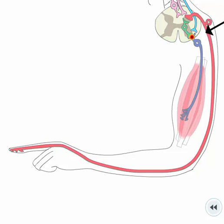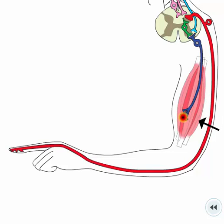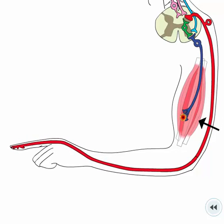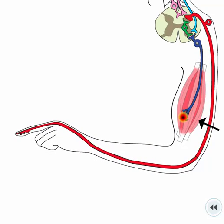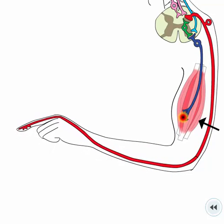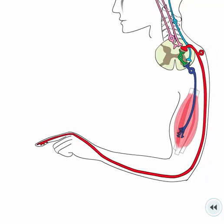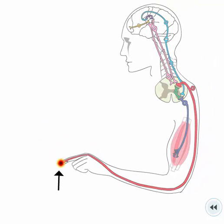Motor neurons conduct nerve impulses from the central nervous system to an effector. Effectors respond to the impulses by contracting if the effector is a muscle fiber, or secreting an enzyme or hormone if the effector is a gland.